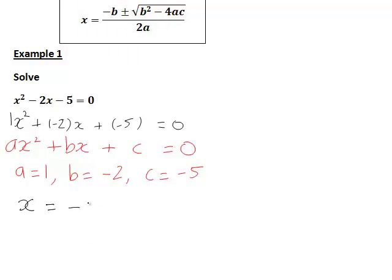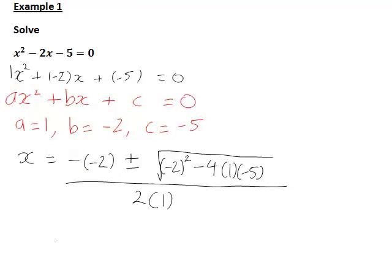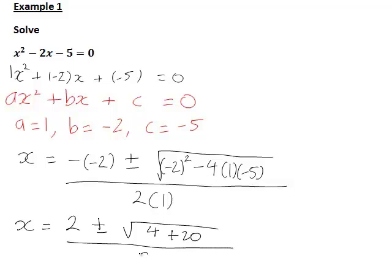b equals negative 2 and c equals negative 5. Substituting into the quadratic formula gives x equal to the negative of negative 2, plus or minus the square root of negative 2 squared minus 4 times 1 times negative 5. This simplifies to give 2 plus or minus the square root of 4 minus 4 times 1 times negative 5, which is plus 20, all divided by 2.